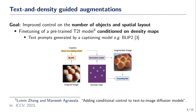To generate augmentations for the counting networks, our first goal is to have improved control on the number of objects and their spatial layout. To achieve this, we train a generative model conditioned on density maps.